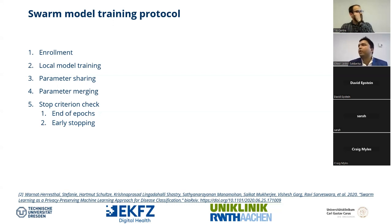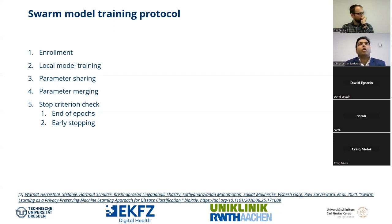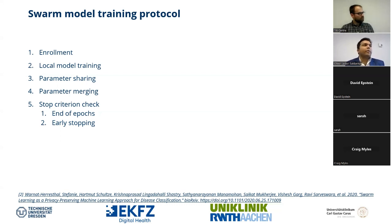Setting a higher minimum number of peers ensures everyone is contributing to the learning process, but contribution weightage can also be set manually. If one center has 10,000 patients and another has only hundreds, you can train the larger one for fewer epochs, give the smaller one more epochs but lower weighting, so that all centers finish at roughly the same point.